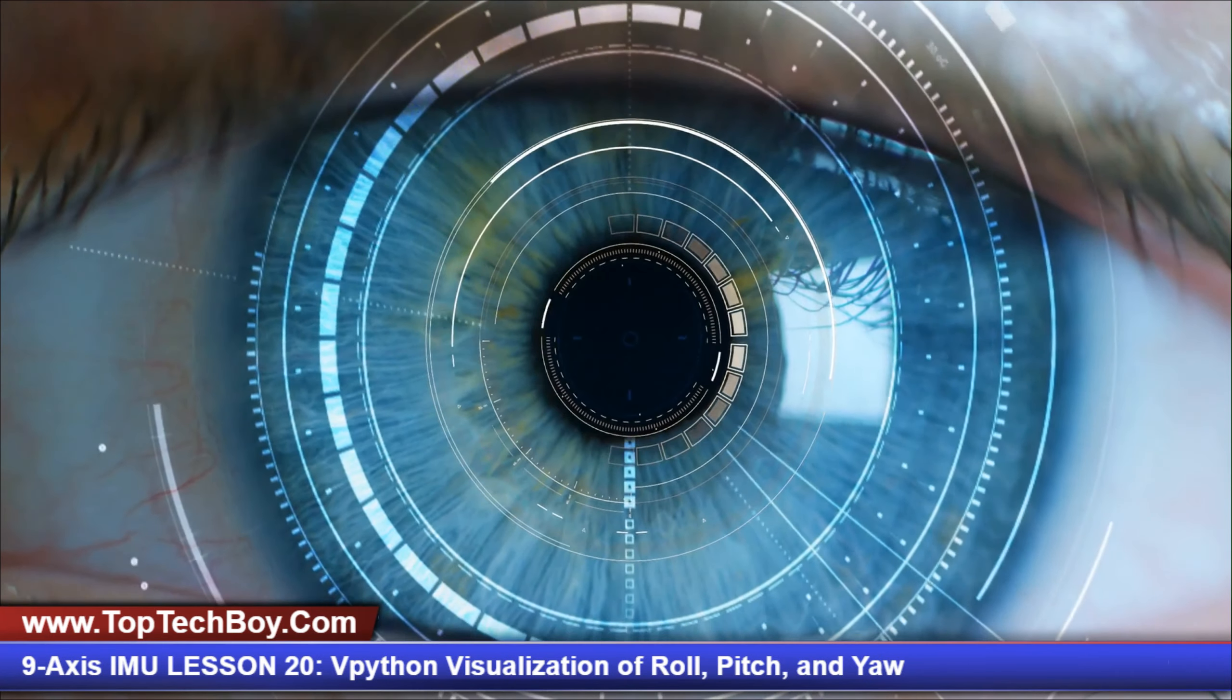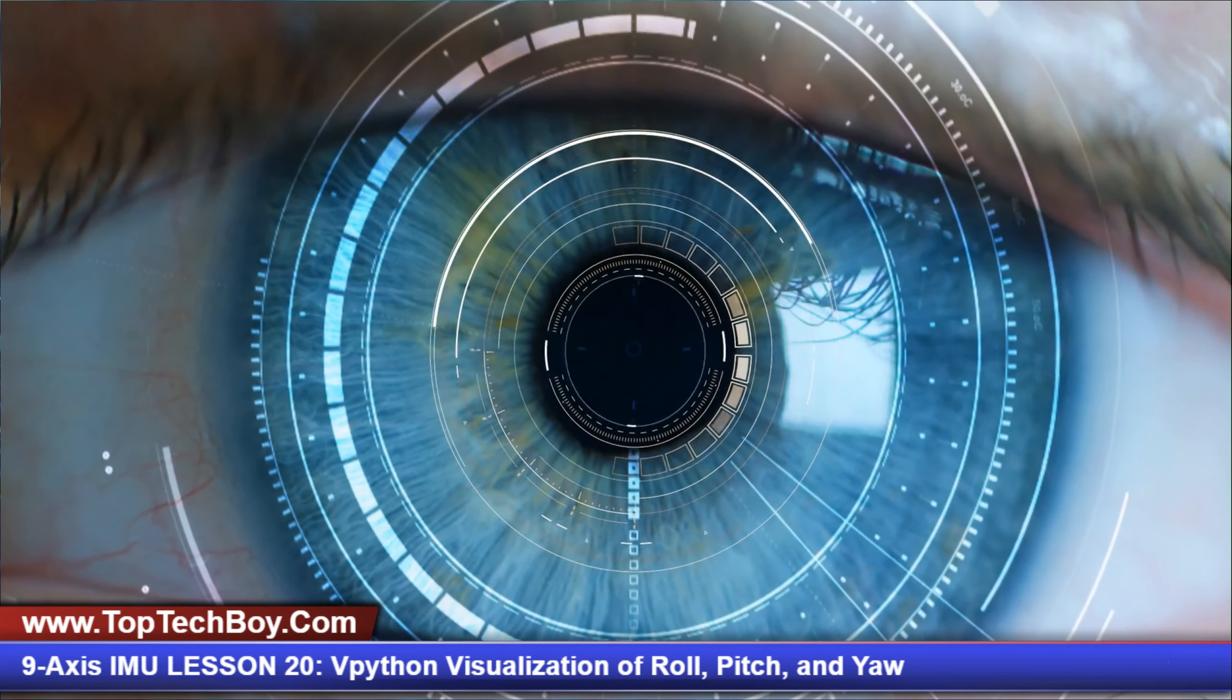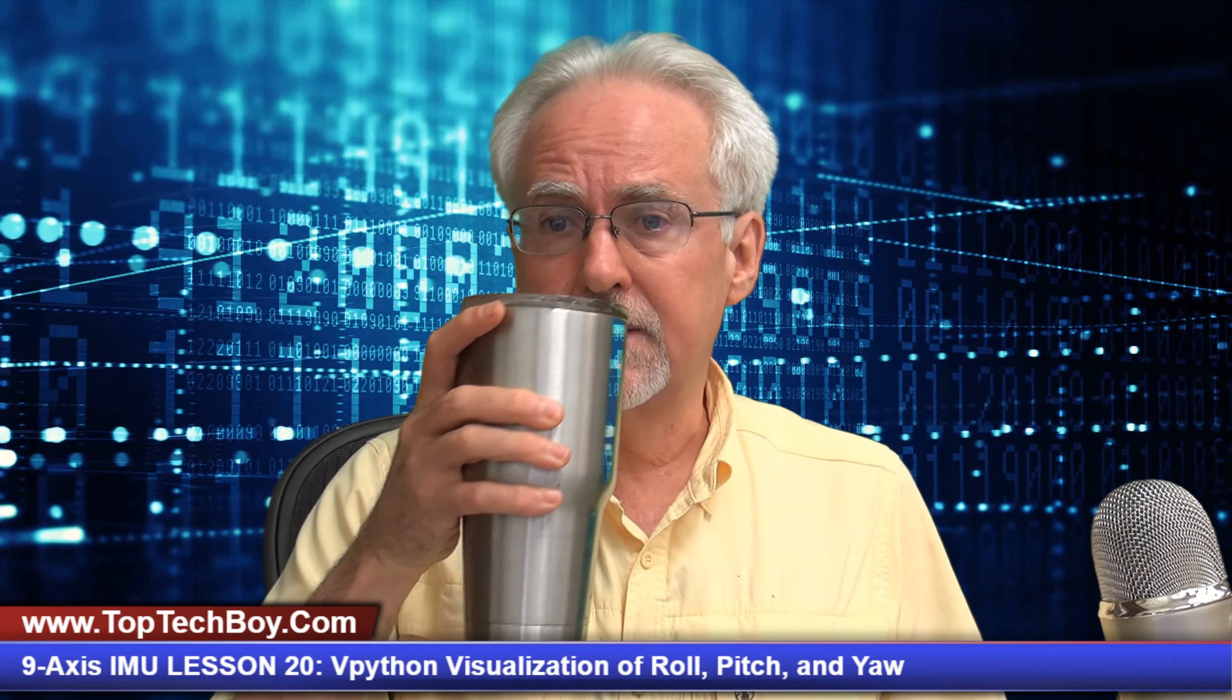10, 9, 8, 7, 6, 5, 4, 3, 2, 1, let's go! Hello guys, this is Paul McWhorter with TopTechBoy.com and we are here today with lesson number 20 in our Arduino tutorial series where you are building a 9-axis inertial measurement system. I'm going to need you to pour yourself a nice big mug of iced coffee. You're going to need it to get through today's lesson. Actually, today's lesson I think is a kind of fun one. It's going to be bringing together a lot of the stuff that we've been doing.